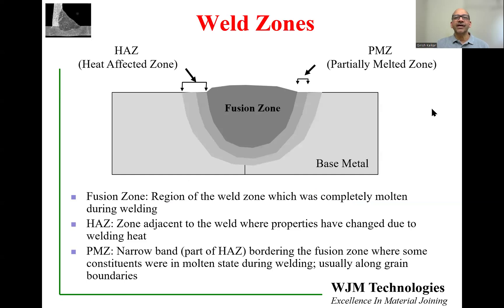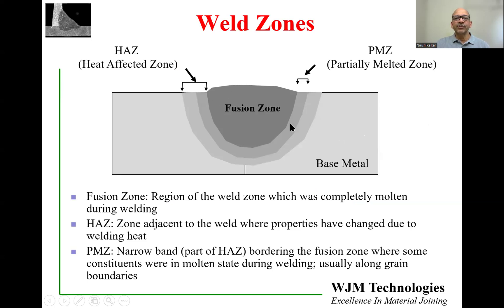Let's start by reviewing the different weld zones when a weld is made. Here I'm showing you a schematic cross-section of a butt weld with a fusion zone used for bonding the two parts together. The fusion zone is the volume of material which was completely molten during welding. Then there is a zone between the fusion zone and base metal where the properties of the material have changed but did not fully melt — and this includes the heat affected zone.